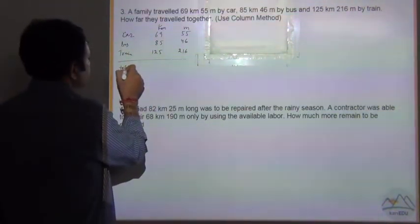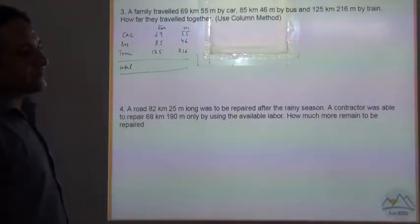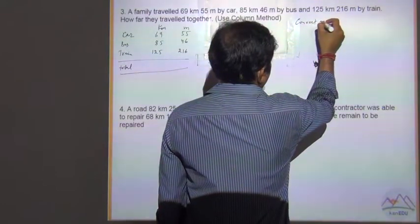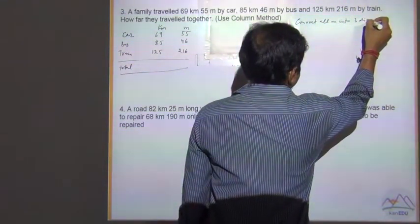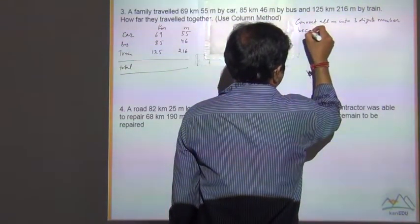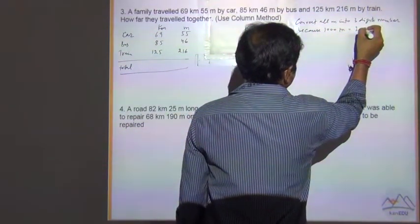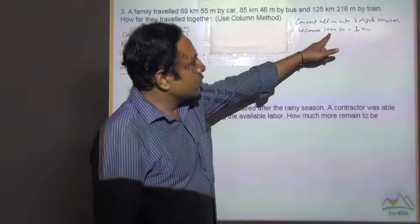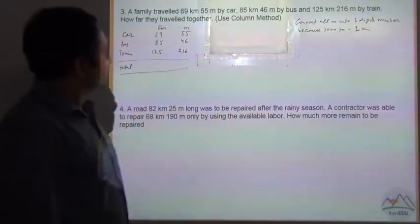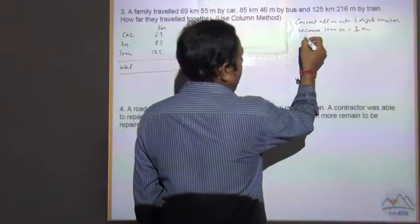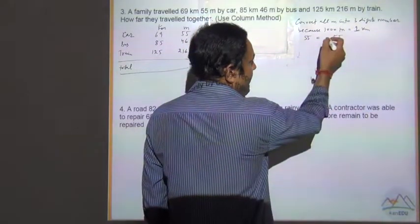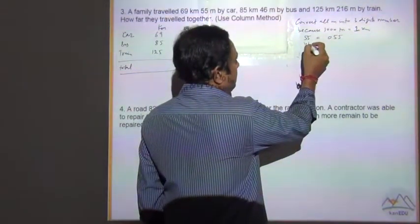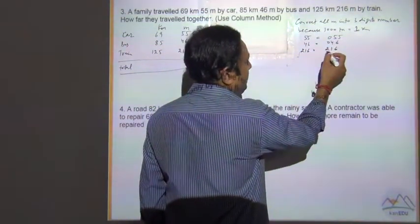Now total will be the sum of them. But there is one point. The point is that convert all meter into three digits. Convert all meter into three digit numbers because 1000 meter is equal to 1 km. So that means three zeroes are required to make a meter into kilometer. So 55 will be equal to three digits. It is two digits. How to make it three digits? We can add zero before that because 055 is same as 55. Similarly, 46 will be 046 and 216 will be 216 because it is already a three digit number.